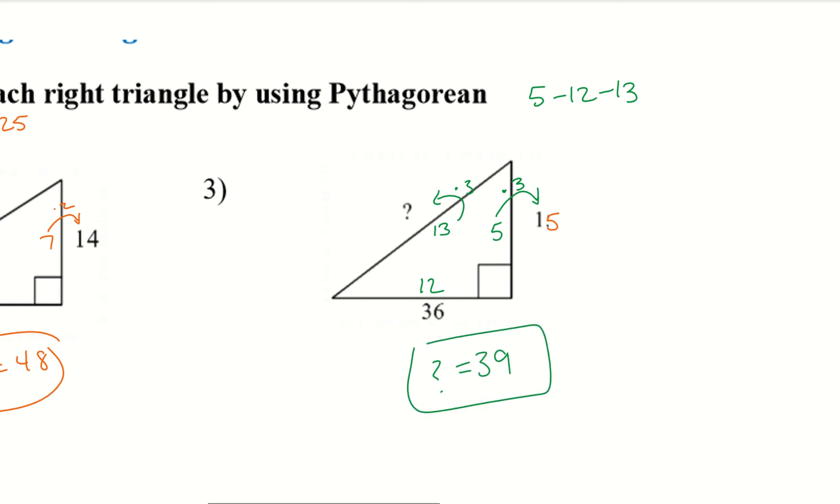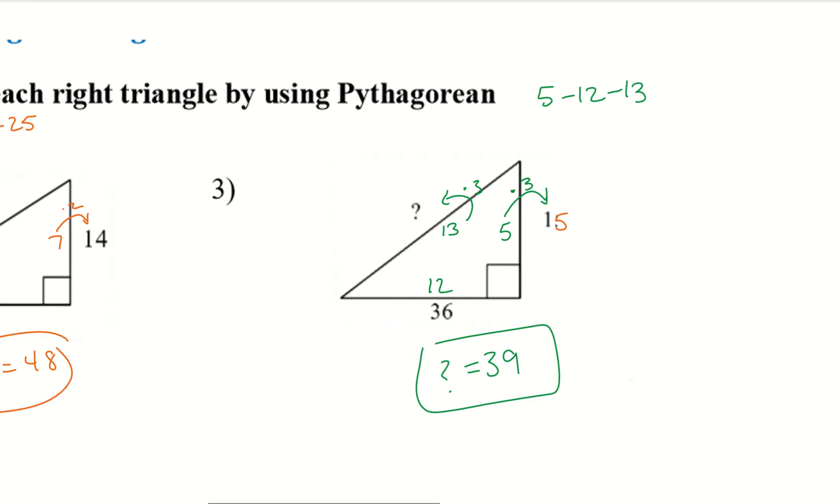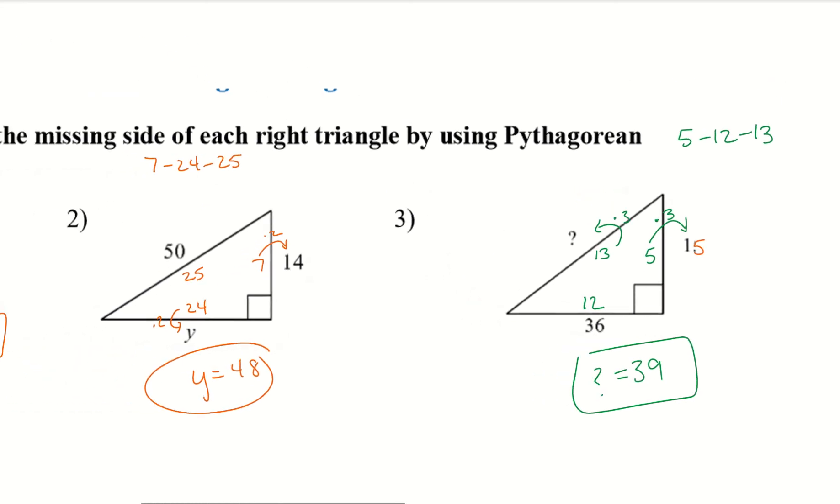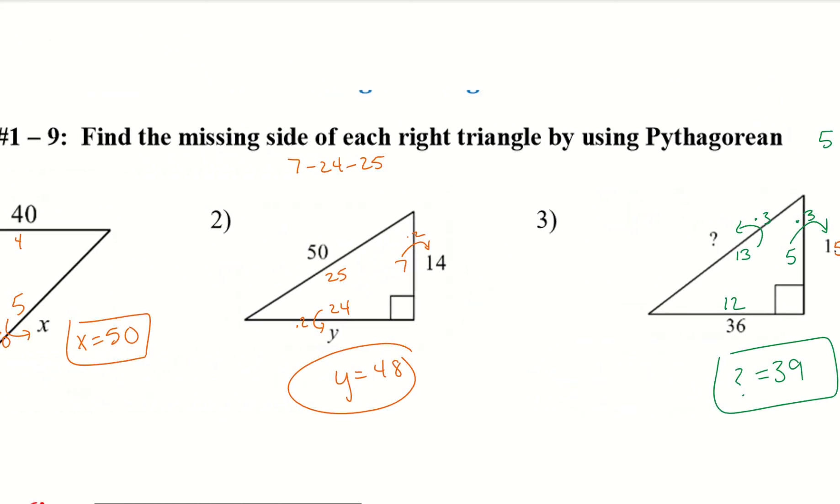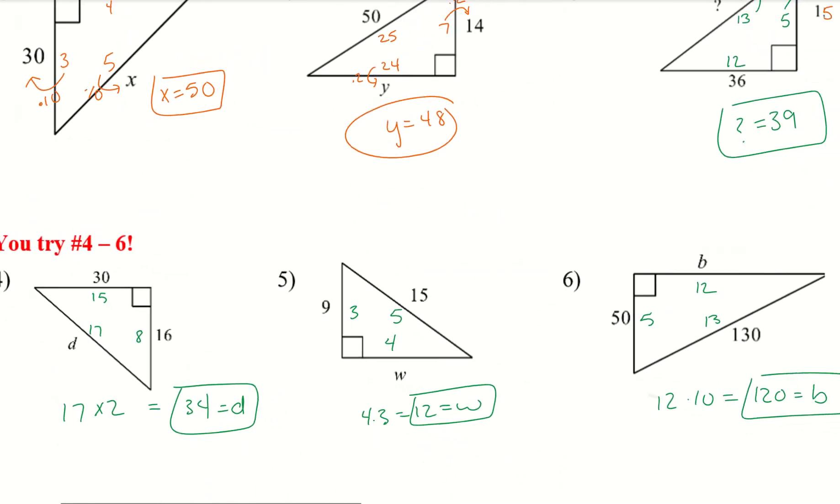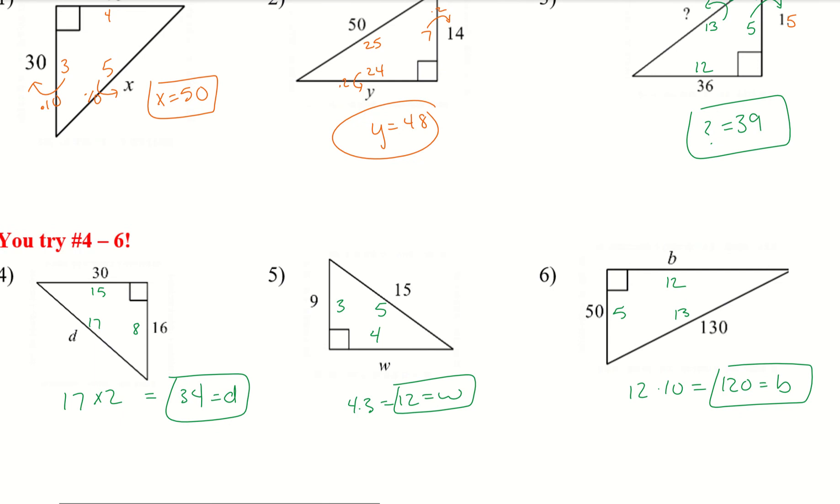Alright, I want you guys to go ahead and try 4, 5, and 6. So, I'll give you guys a second. Go ahead and pause the video. Try that out on your own sheet of paper. Alright, let's go ahead and take a look. So, I set up the Pythagorean triples on the inside again. And then I multiplied by the value that was my scale factor.